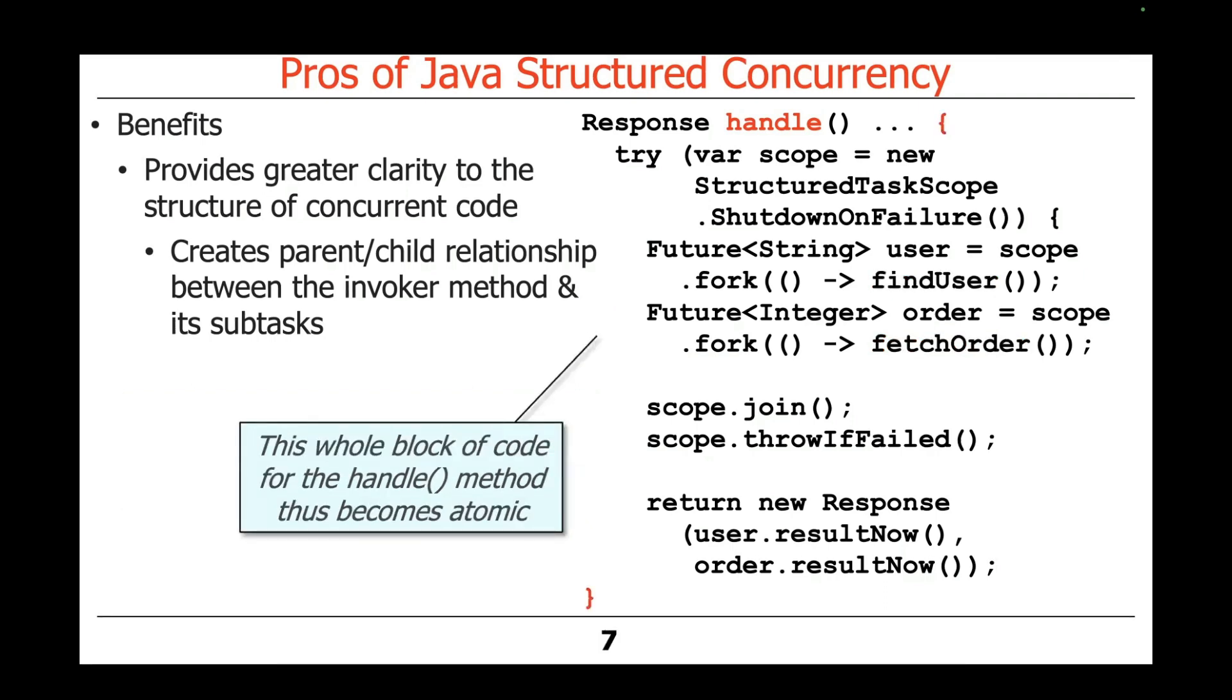This whole block of code here that's called handle becomes atomic. It launches those threads, it does all the work, gets the result back, and we never have to worry about any of those computations leaking out and living beyond the scope of this method.